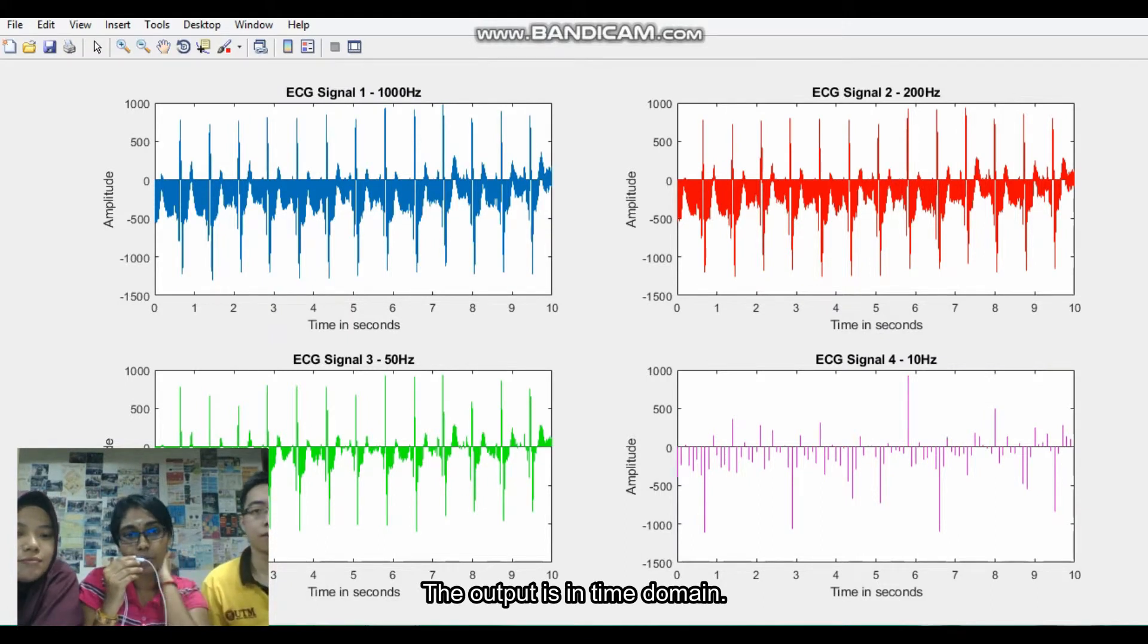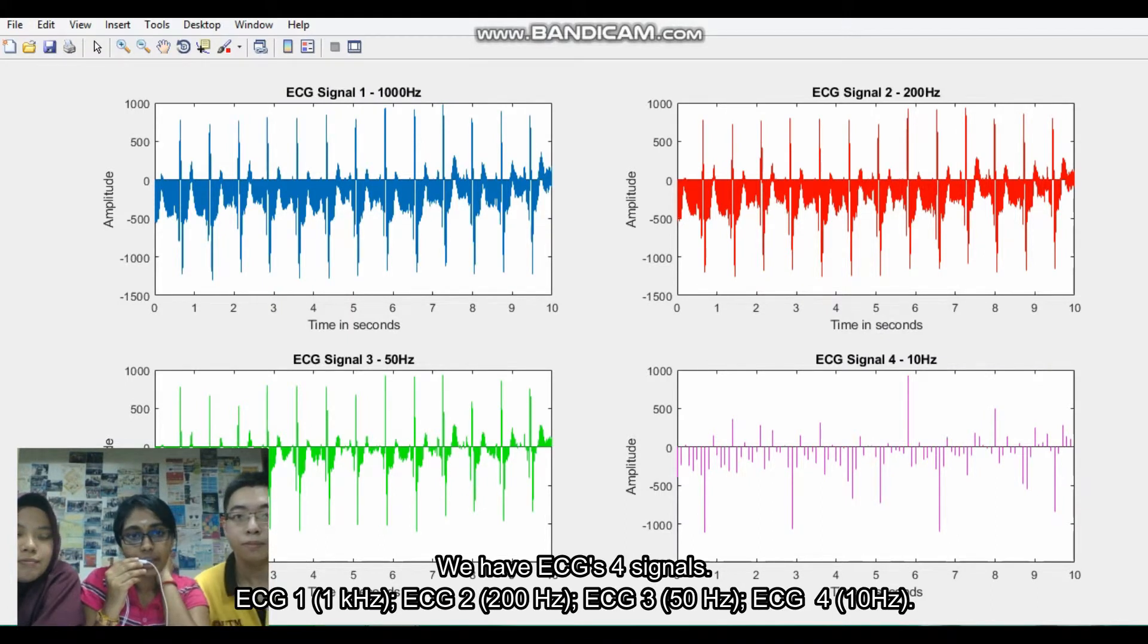The output result is in time domain. We have ECG for signal. ECG signal 1, 1000 Hz.